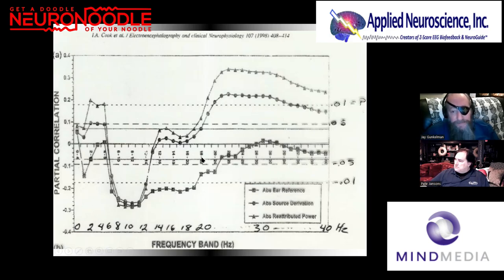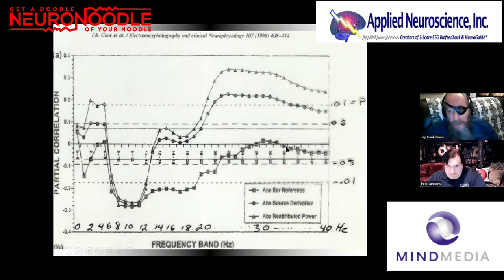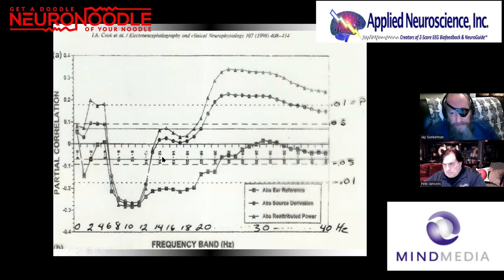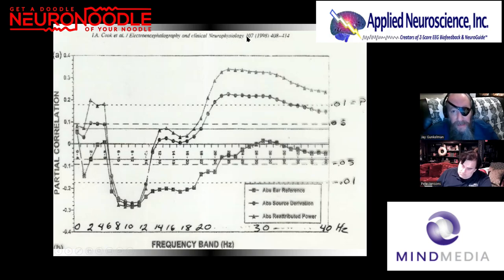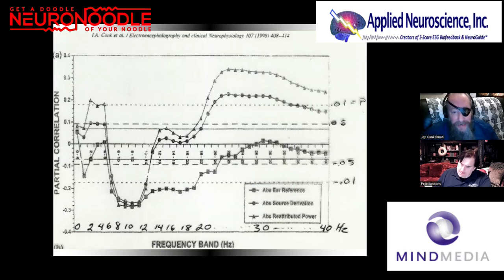Regardless of brain location, if you see beta spindling — fast activity above 16 Hz — you have hyperperfusion. If you're using linked ears rather than Laplacian, you may not see local function well at all, because local function is local and linked ears measures the difference between local and the ears. This study by Ian Cook, published in the Journal of Electroencephalography and Clinical Neurophysiology, volume 107, 1998, pages 408–414, from UCLA's NeuroPsych Institute lab, shows this quite directly.